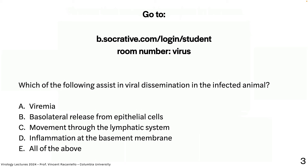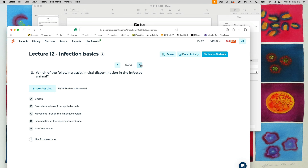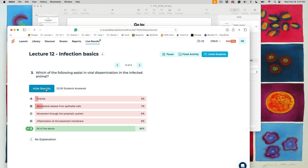A class question: which of the following assist in viral dissemination in the infected animal? The answer is all of the above — viremia, basolateral release from epithelial cells, movement through the lymphatic system, and inflammation at the basement membrane. All of them play a role in viral dissemination.